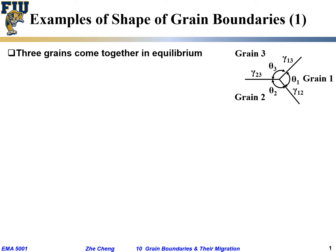Let's think of a practical polycrystalline material where we have three grains come together. We have angles θ₁, θ₂, θ₃, and grain boundary energies γ₁₂, γ₂₃, and γ₁₃. γ₁₂ means the grain boundary energy between grain one and grain two; γ₂₃ is the grain boundary energy between grain two and grain three. That's the more general case.